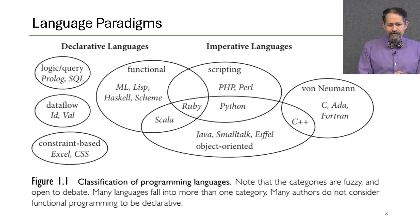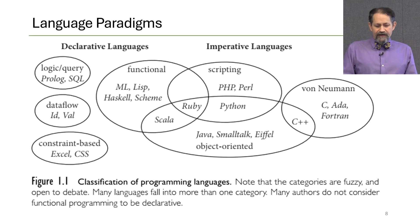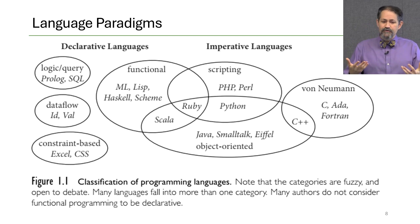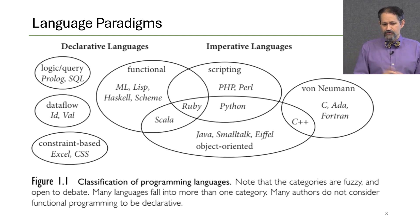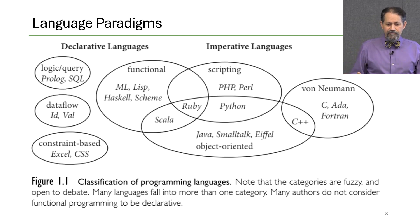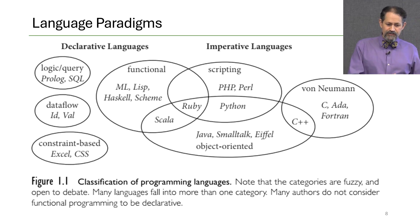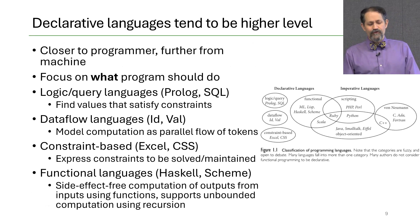Let's talk about different language paradigms. Most of us are familiar with imperative languages like Python, C, and Java, which talk about how we want the computer to do something. But there are other styles — declarative languages that are more focused on what the computer is supposed to do. Functional programming sits between declarative and imperative, while von Neumann style languages like C are more on the imperative side. Purely declarative languages include Prolog, SQL, and even Excel.